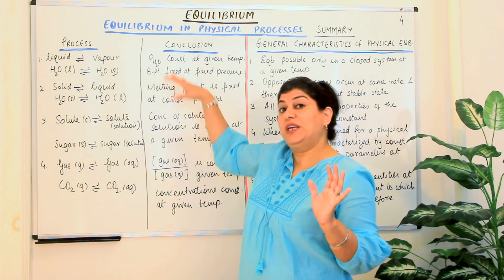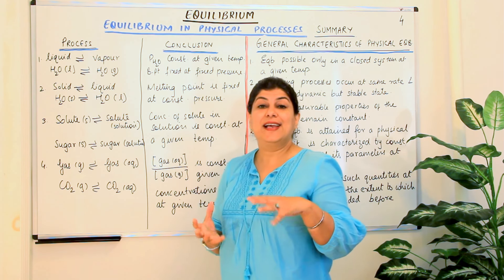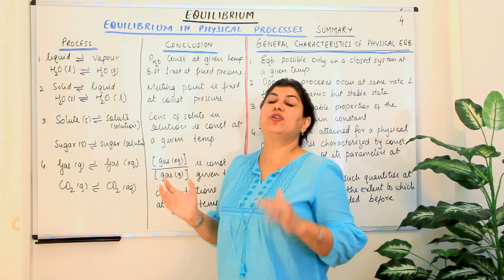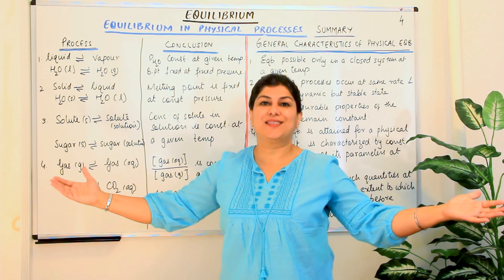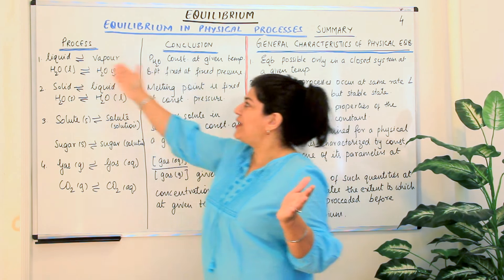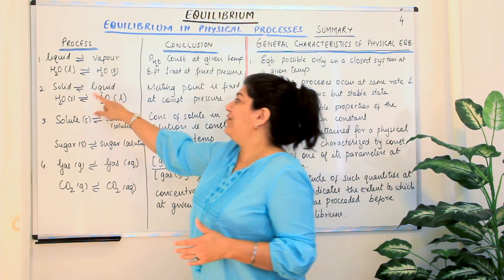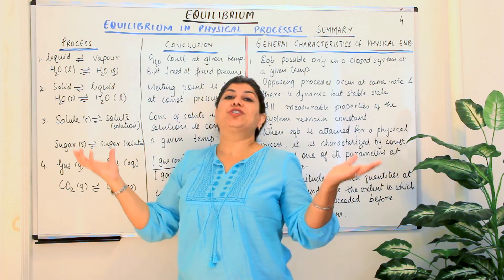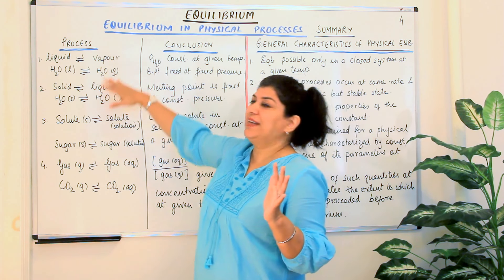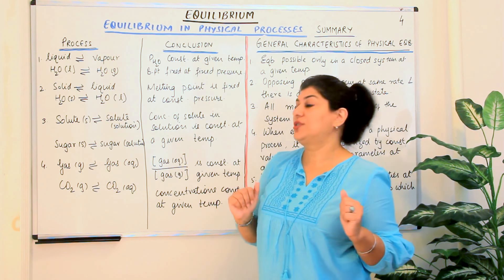Remember: all of these equilibria have to be in closed vessels — they have to be isolated systems. Equilibrium will not be established if you have an open system, because the reverse reaction would not take place. For example, if vapour is produced, the vapour will be lost to the surroundings. Therefore, whatever physical equilibria exist, you need a closed system for them.